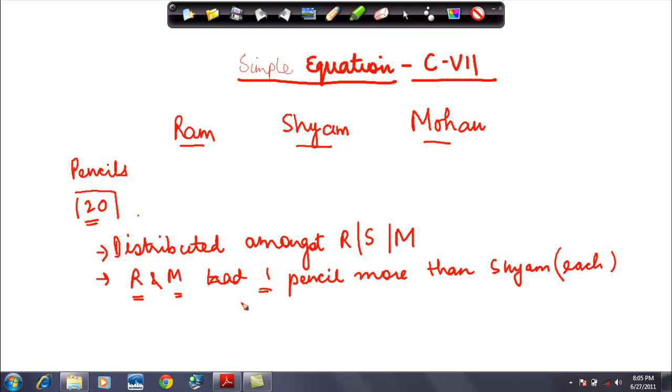How do you compute this number? You can always start making guesses and at some point in time you may reach the answer also, but is there a scientific method by which I can do it? I do not know how many pencils were available with Sham. So what did I say? I said let us assume that the number of pencils available with Sham were X.